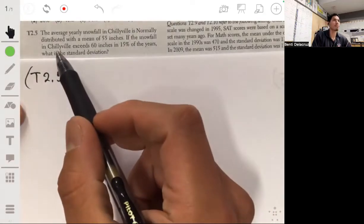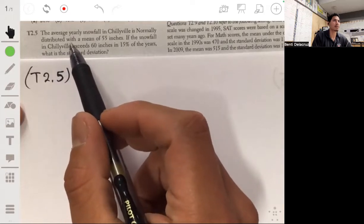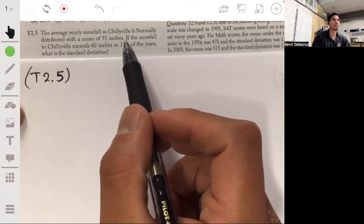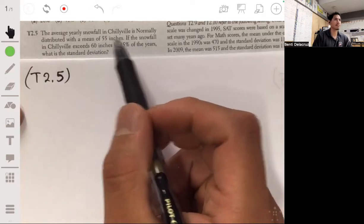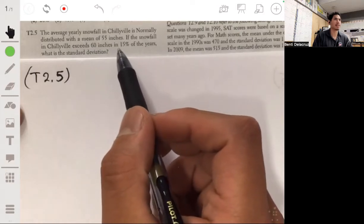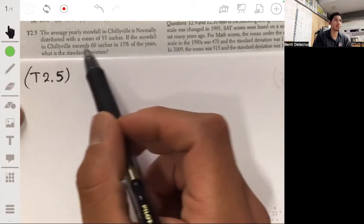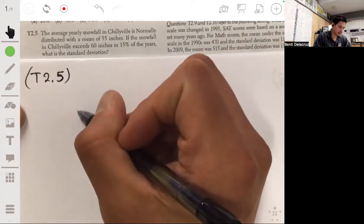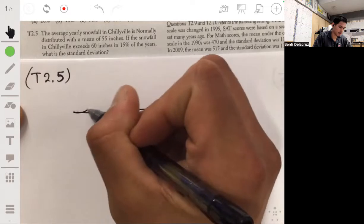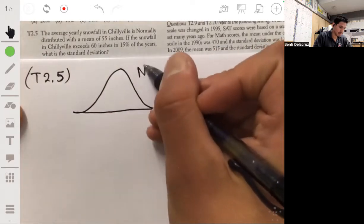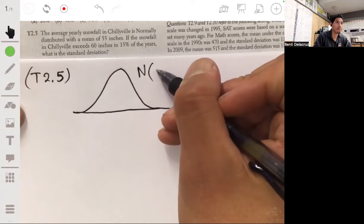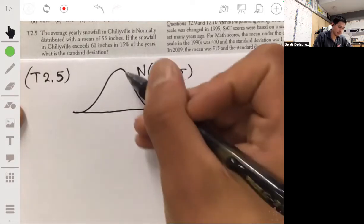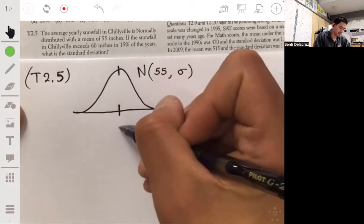Alright, so for problem 2.5 we have that the average yearly rainfall in Chileville is normally distributed with a mean of 55 inches, and it's asking if the snowfall exceeds 60 inches in 15% of the years, what's the standard deviation? Let's start by drawing a normal curve. It's normal with a mean of 55, so that means the middle will be 55.